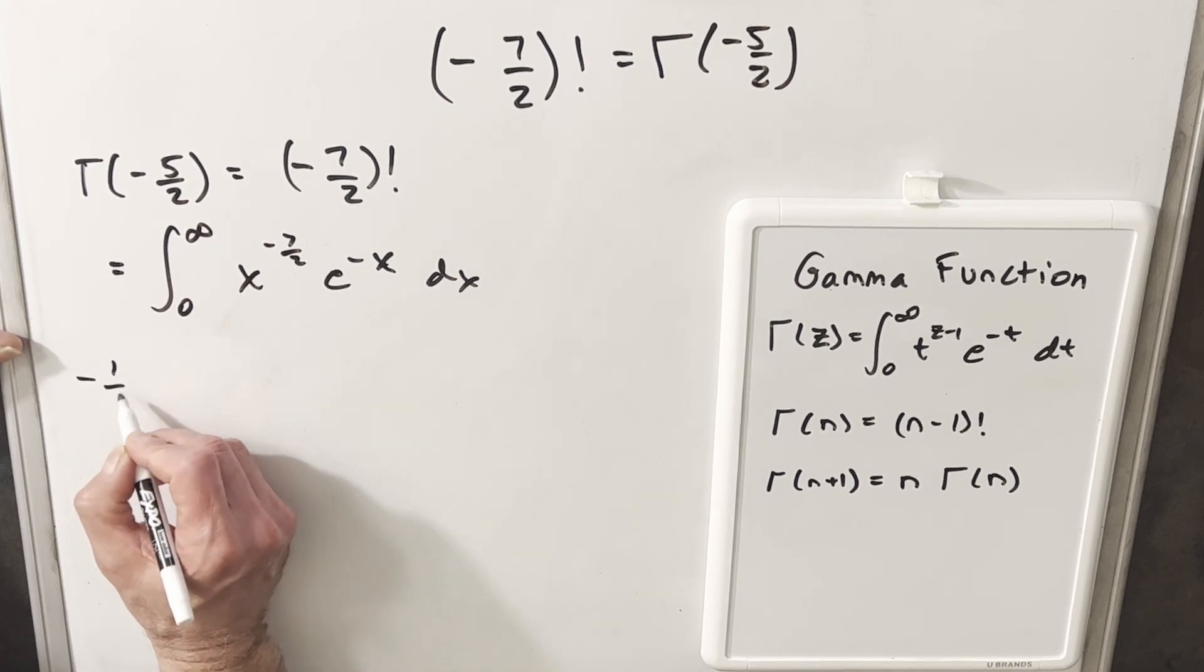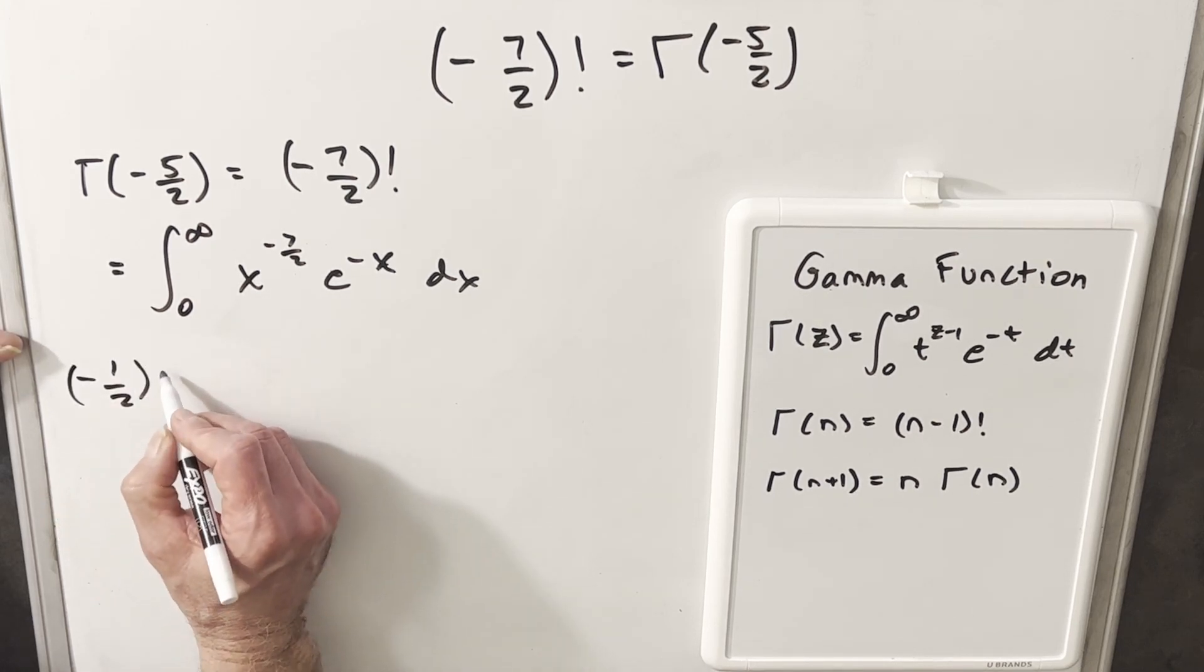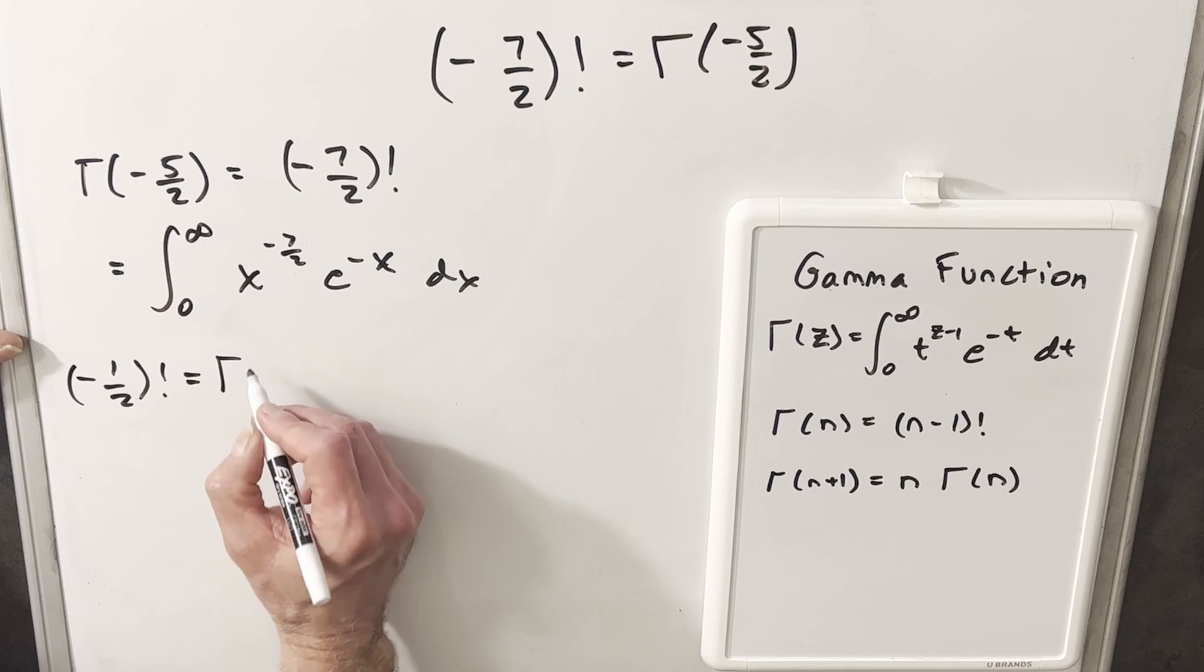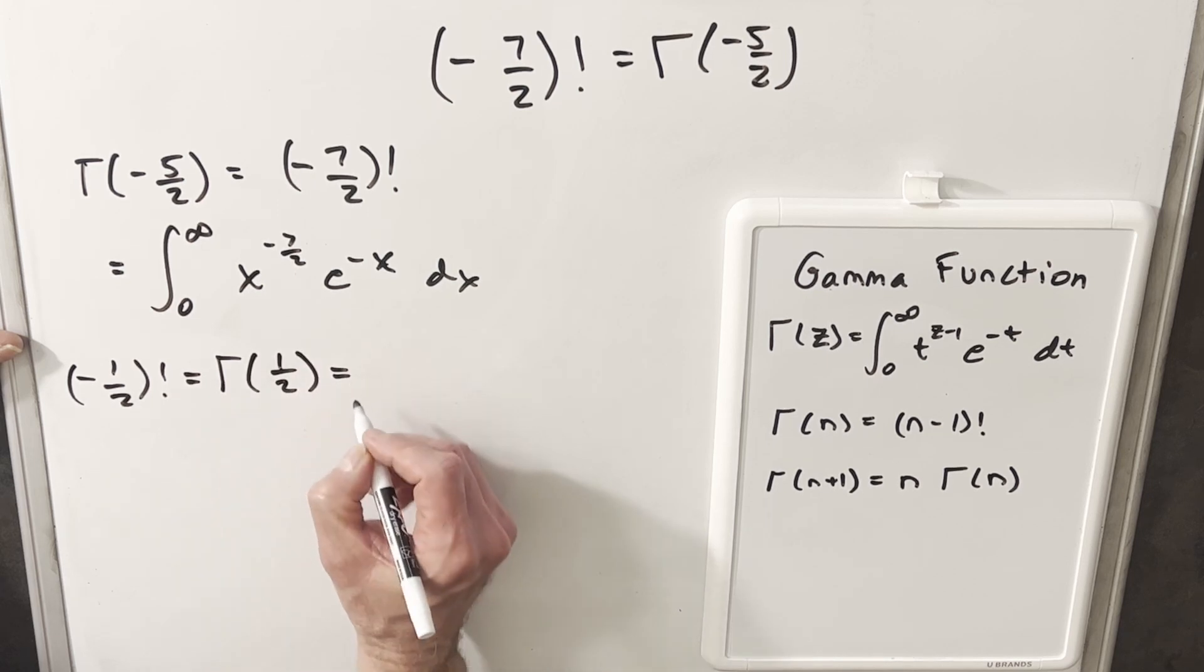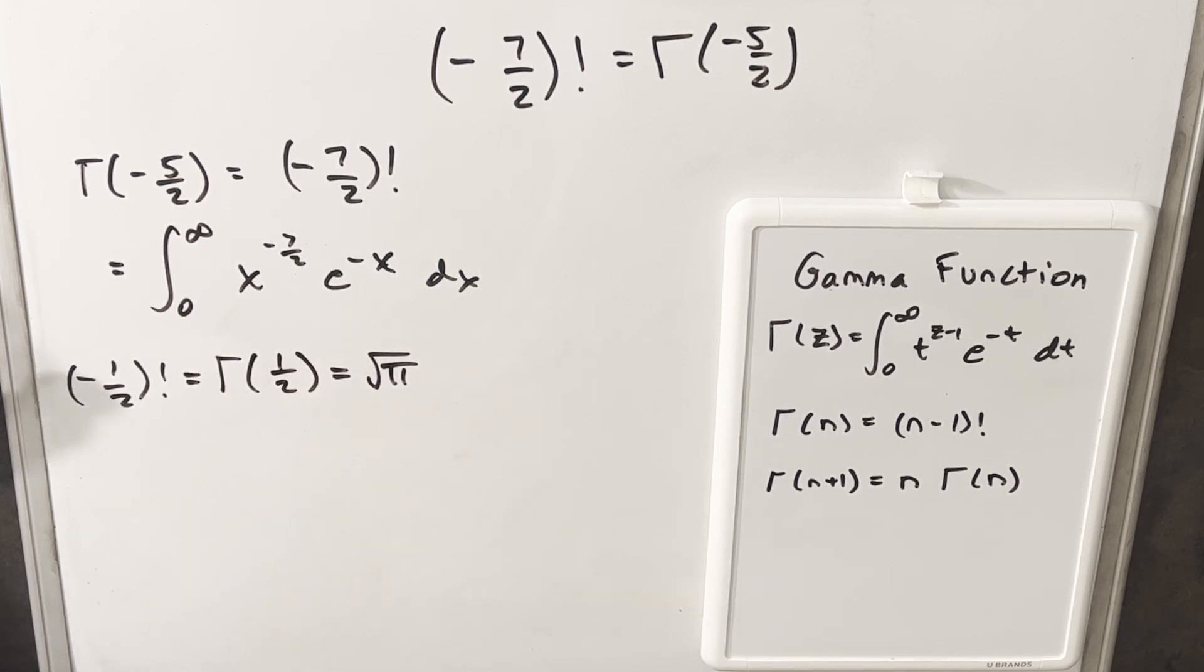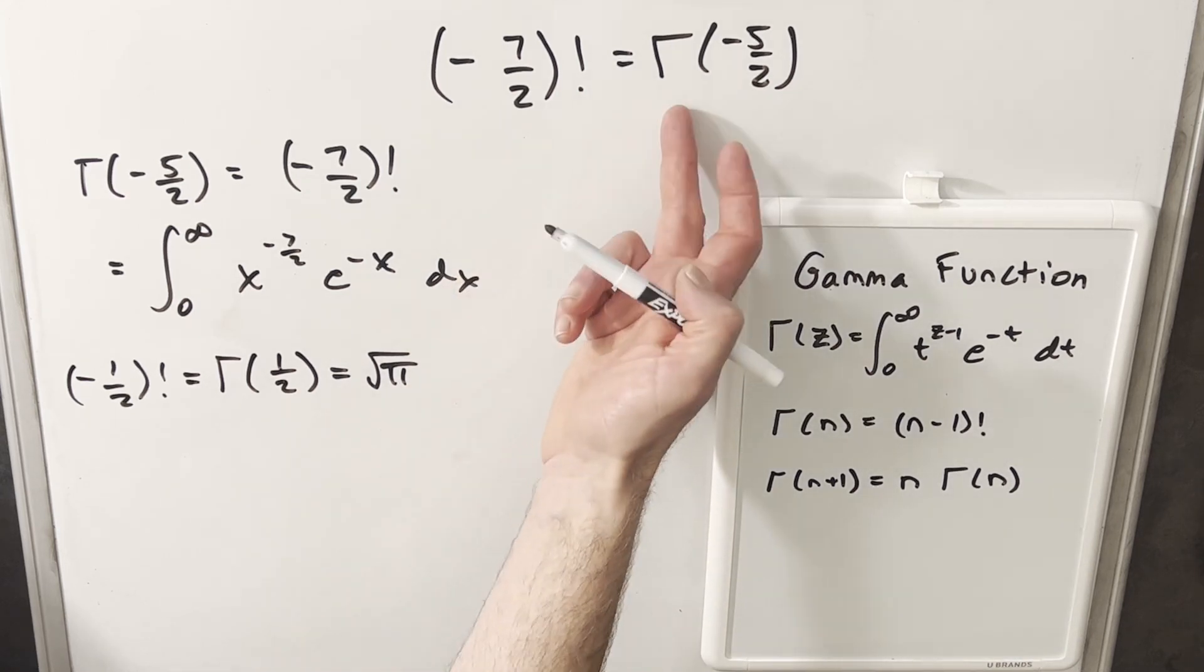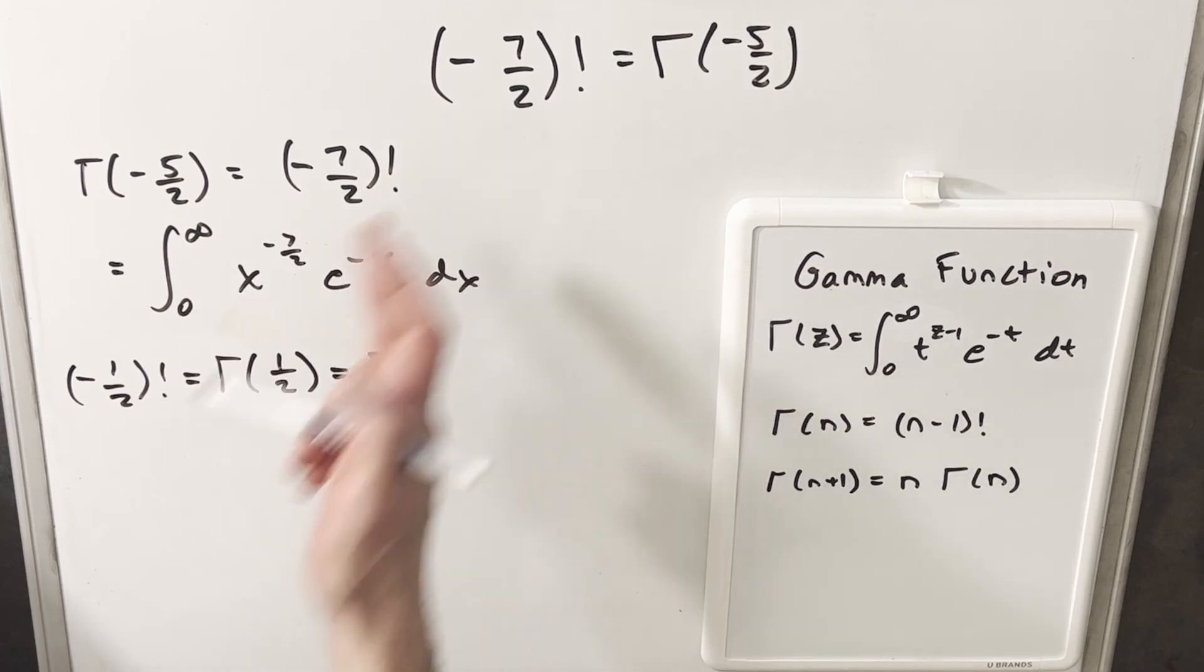Now in a previous video, and I'll give a link in the description, we found the value of minus one half factorial, and this was the same as gamma of one half, and this was square root of pi. So what I want to do is use this value to get back and find the value we're looking for, this gamma of minus five halves or minus seven halves factorial.